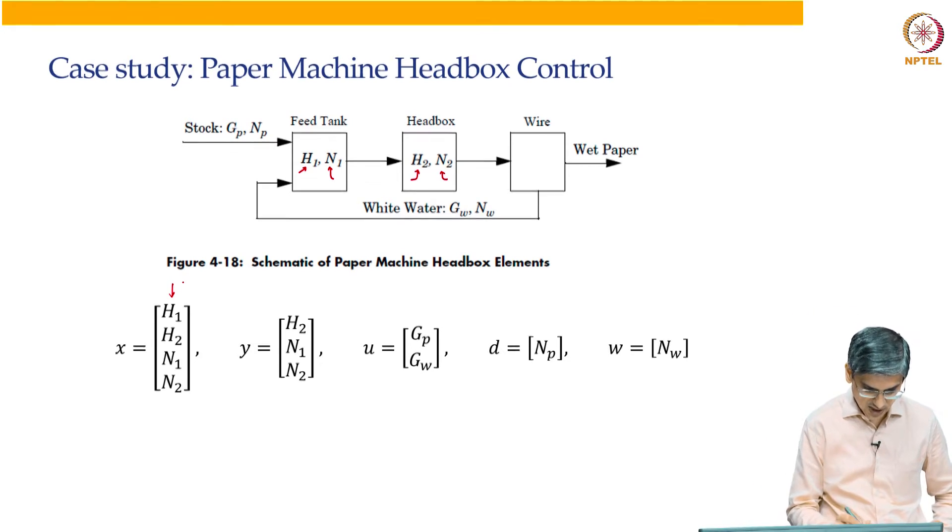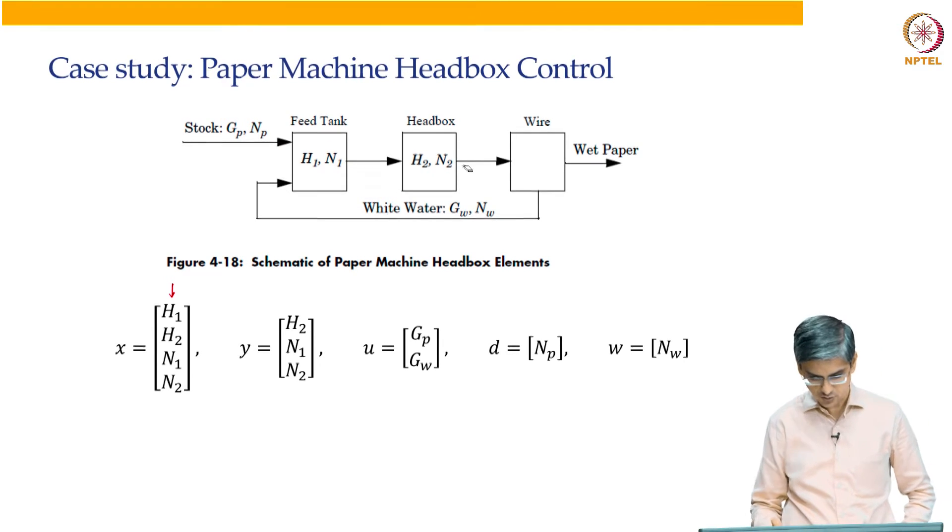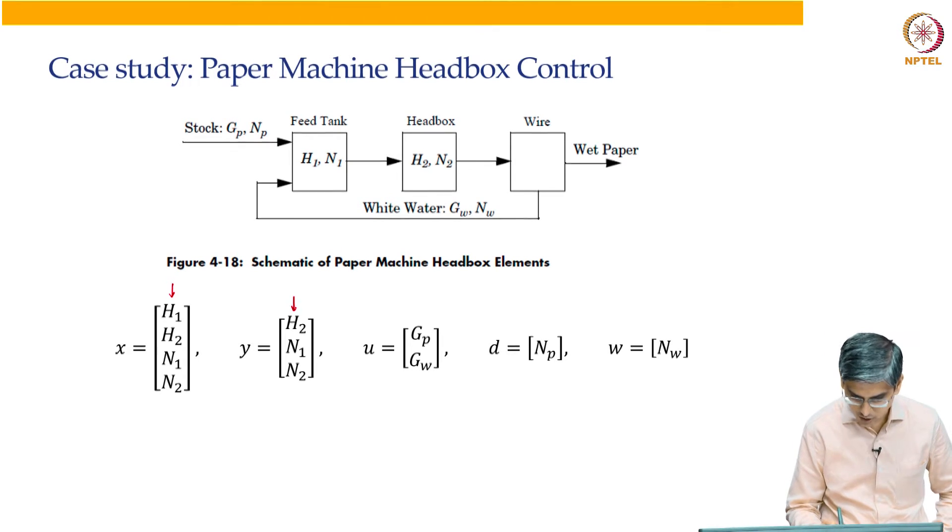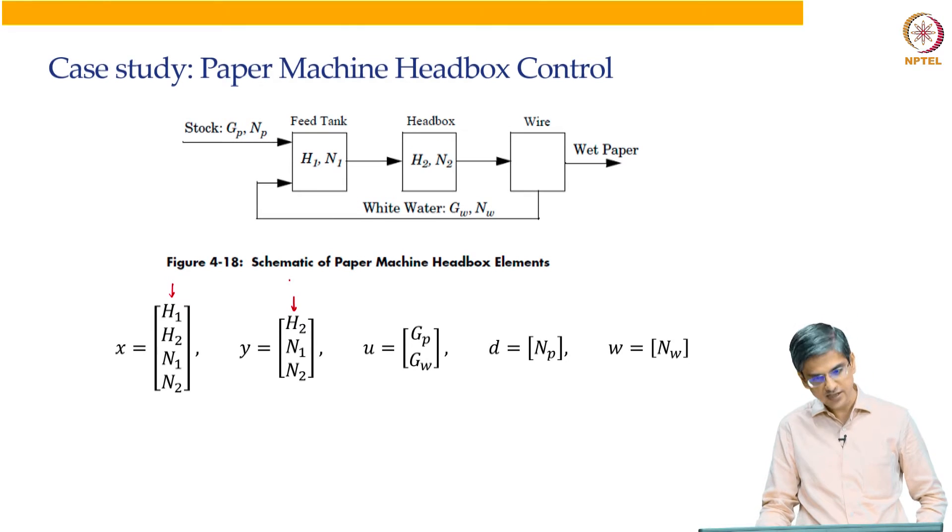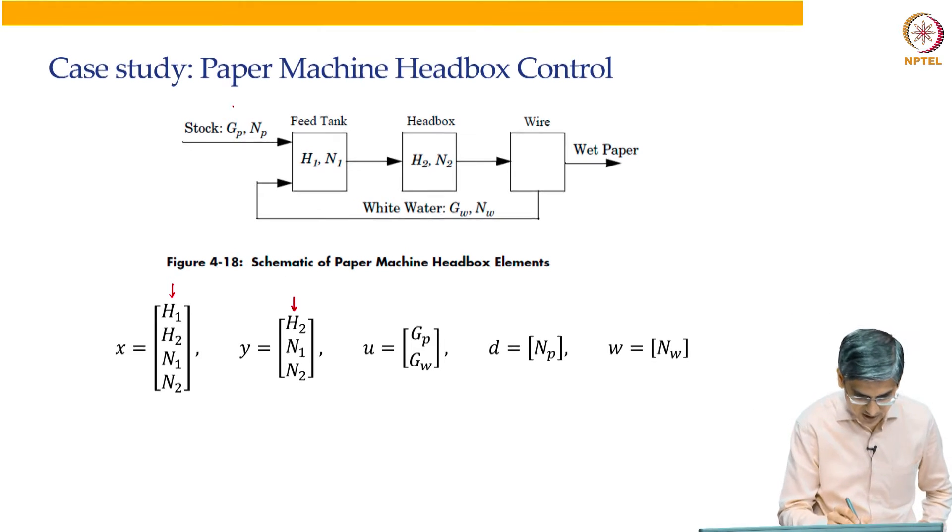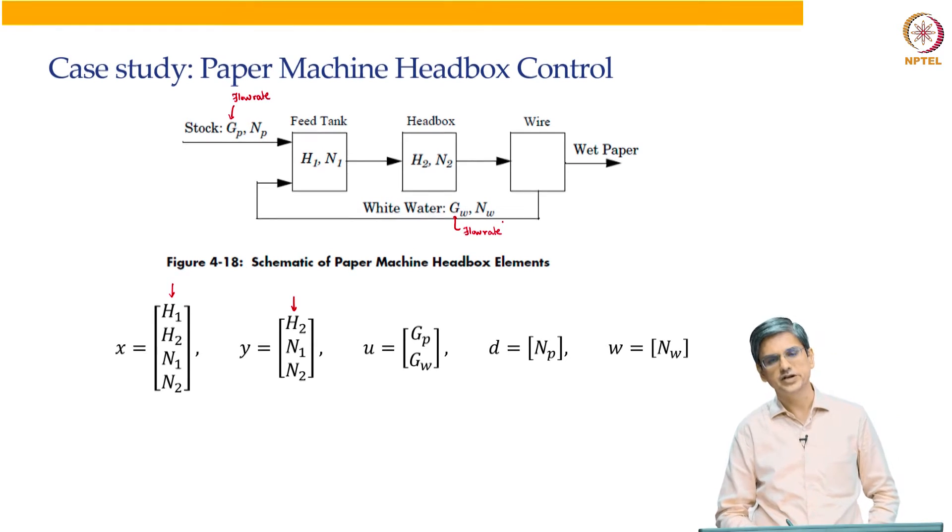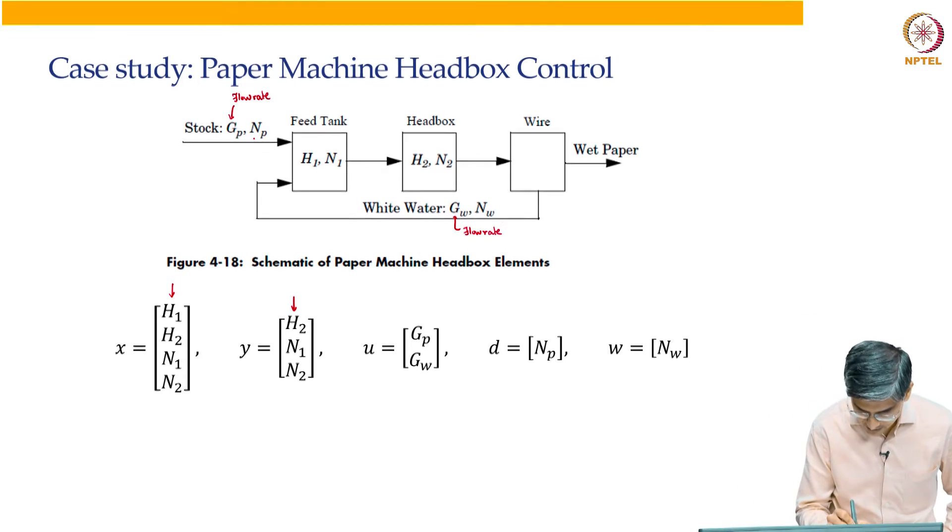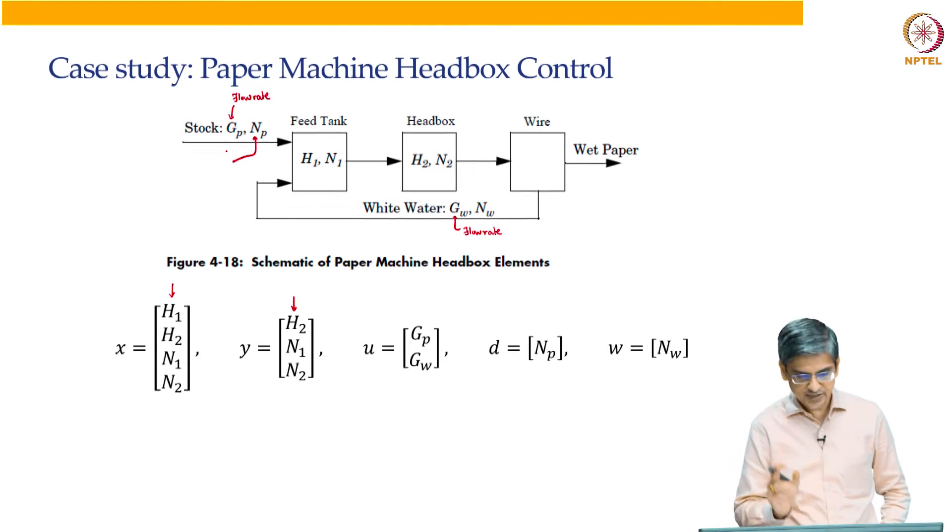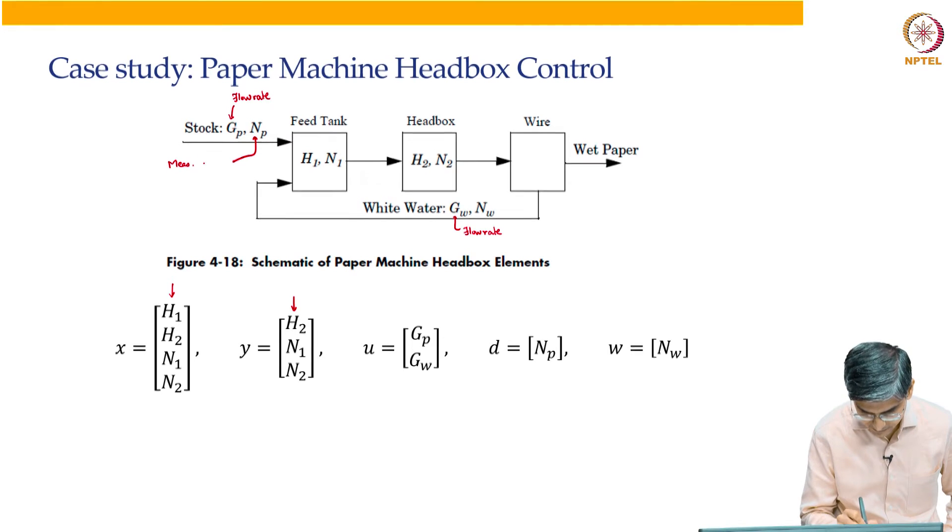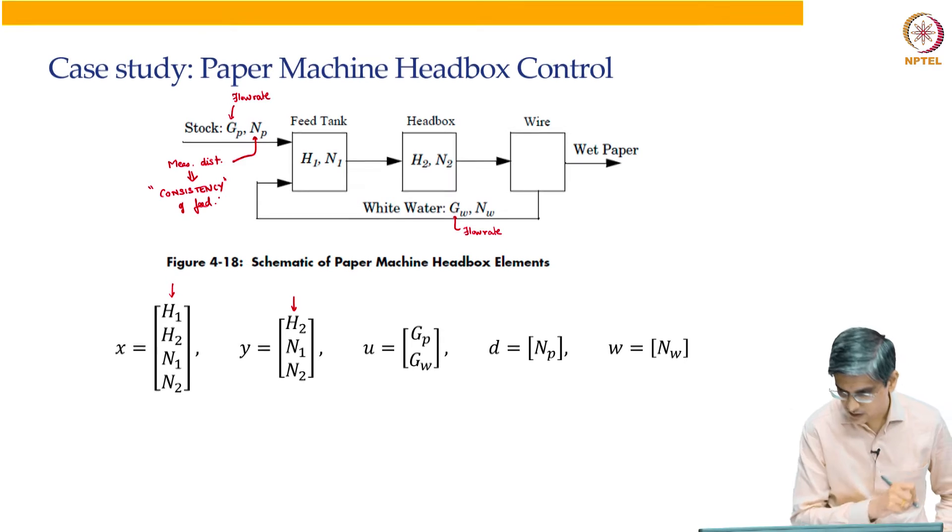So there are four states. These four states are level 1, level 2, consistency 1, consistency 2. The outputs that you are interested in controlling according to this particular problem setup is the level in headbox 2, consistency in the feed tank and consistency in the headbox 2. So what are the manipulated variables? Manipulated variables are flow rate of the inlet and flow rate of the recycle, the white water flow rate.